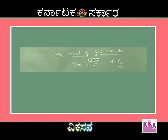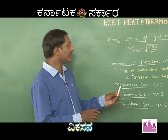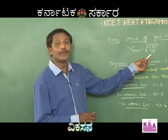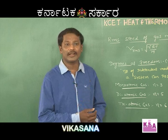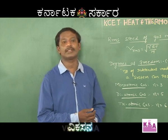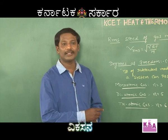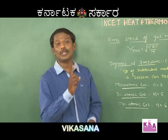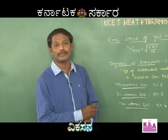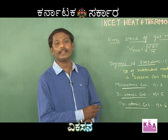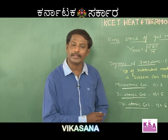Using this relation we find the RMS value of the gas molecules. From this equation, RMS speed is directly proportional to the square root of temperature — as temperature increases, the speed of the gas molecule also increases. On the other hand, RMS speed is inversely proportional to the square root of molecular weight, so as molecular weight increases, the RMS value decreases.